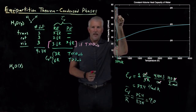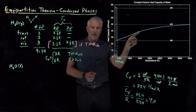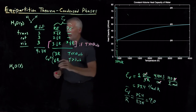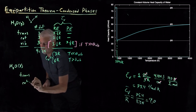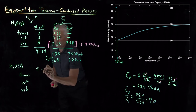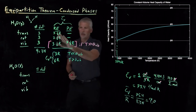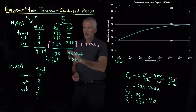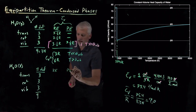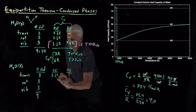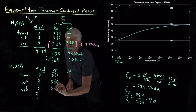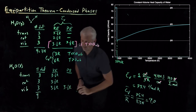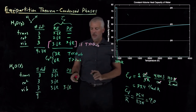We can use the equipartition theorem again to explain why the heat capacity is 9R. We still have three translational, three rotational, and three vibrational degrees of freedom for a total of nine. Kinetic energy always contributes to the heat capacity: three times ½R for translation, three times ½R for rotation, and three times ½R for vibration. As with gaseous water, if we're hot enough to be classical, vibrations also contribute three times ½R via the potential energy.